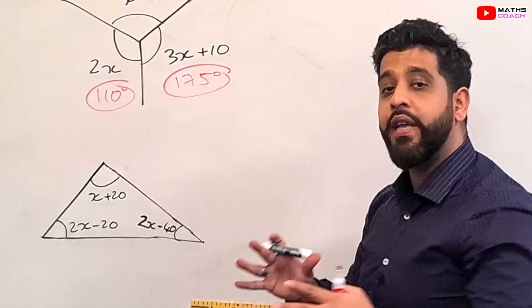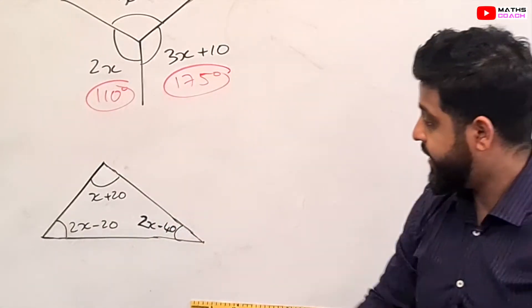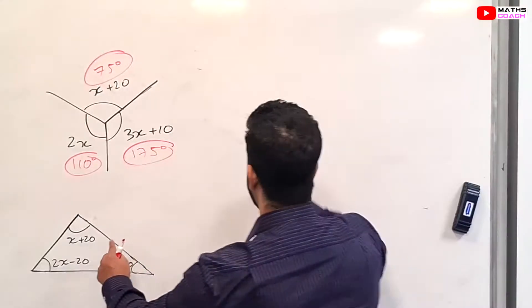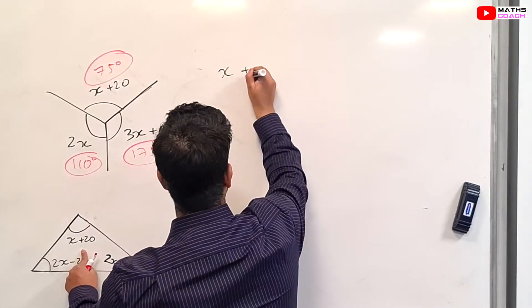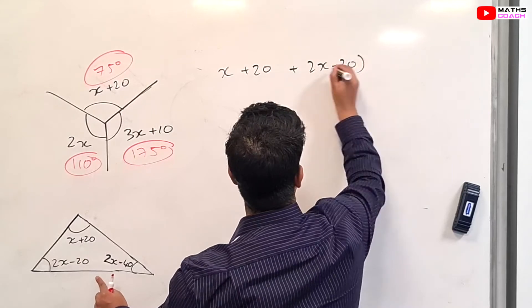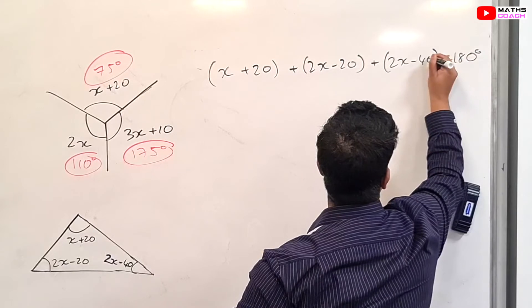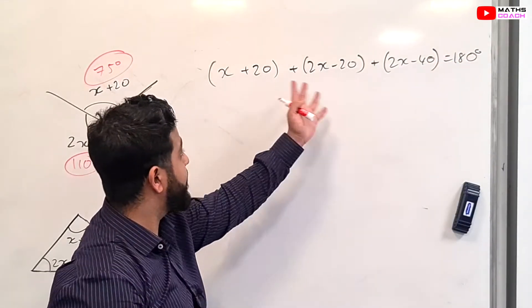So on to the triangle now. We know that the angles in a triangle add up to 180. So this angle plus that angle plus that angle equals 180. So let's set that up as an equation now.